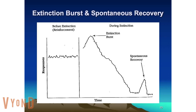Here's a diagram of what extinction burst and spontaneous recovery look like. Before extinction, you see the behavior occurring at a certain rate. You implement extinction, you see an immediate spike in the behavior. Then you see a gradual decrease, then a reoccurrence of the behavior, and then back to a gradual decrease.